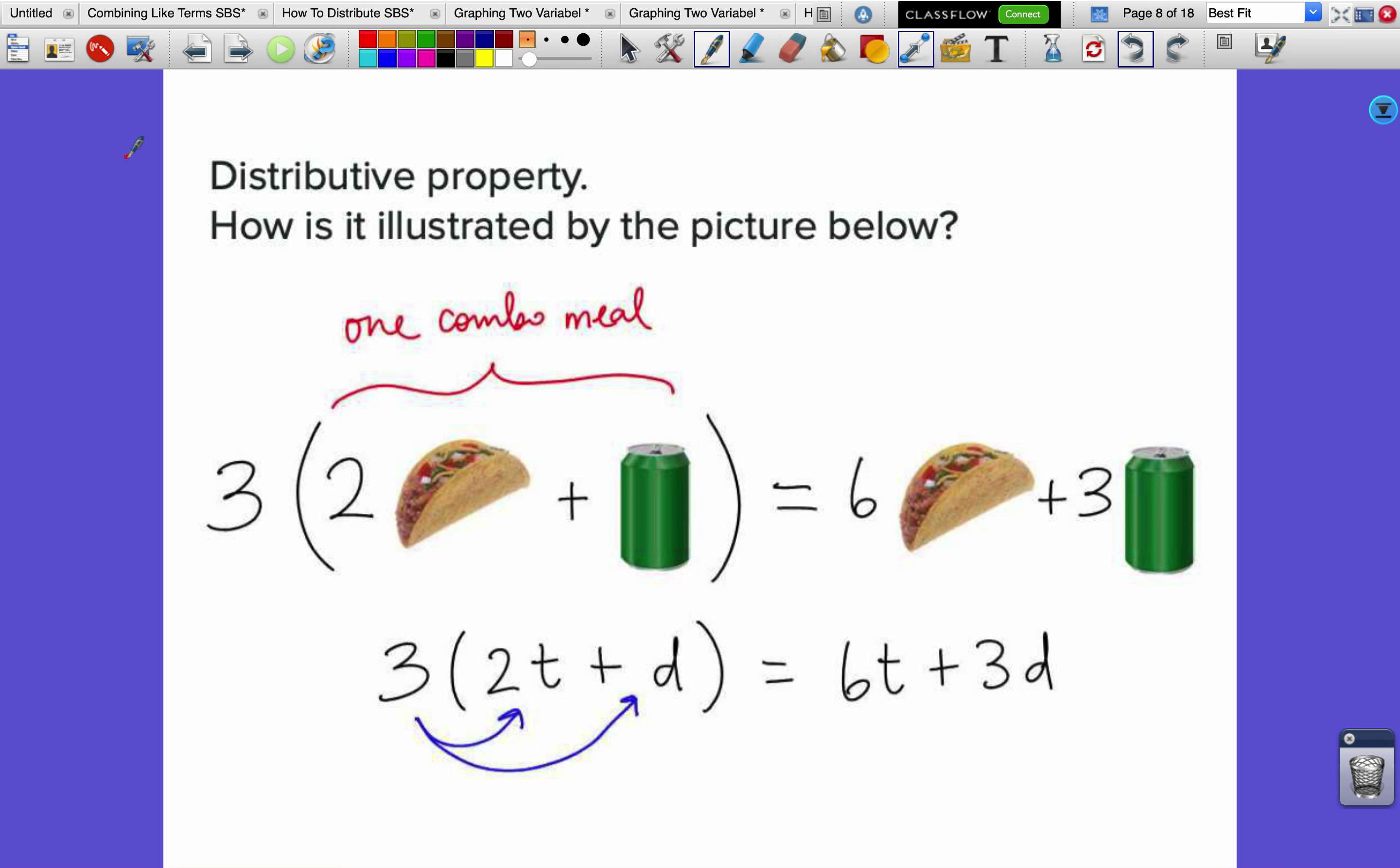How is the distributive property being shown in this picture below? A combo meal in this scenario is two tacos plus a drink. This 3 means that we want three combo meals, so we're distributing that 3 into the two tacos plus a drink to figure out that the total is just six tacos and three drinks.